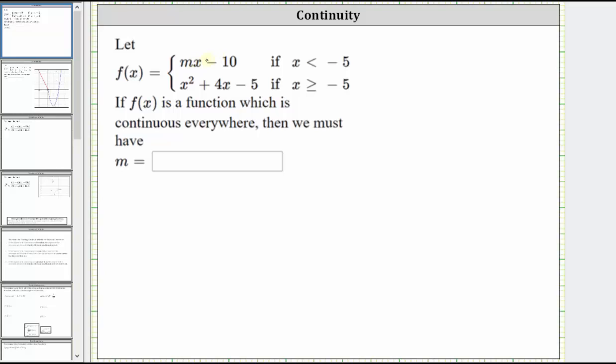We know a linear function is always continuous and so is a quadratic function. So looking at the intervals here on the right, the only possible break in the graph would be at x equals negative five, which means in order for the function to be continuous everywhere, the two function rules must be equal at x equals negative five.